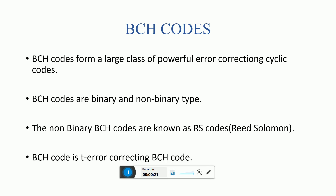BCH code forms a large class of powerful error correcting cyclic codes. There are two types of BCH codes: binary BCH code and non-binary BCH codes. We are going to study the binary type in this lecture. The non-binary BCH codes are known as RS codes — Reed-Solomon codes. We will study the RS code encoding and decoding process in further lectures. BCH code is also called as T-error correcting BCH code.